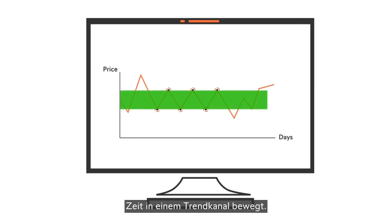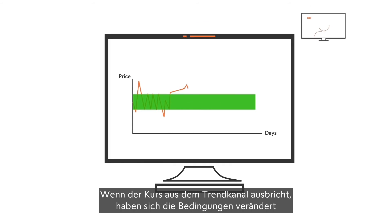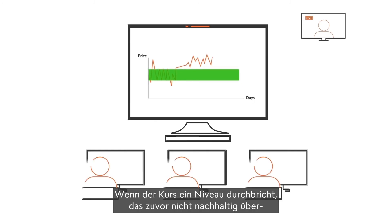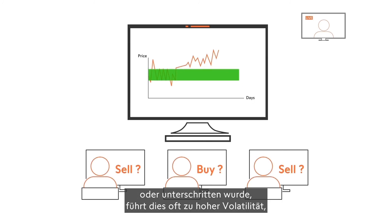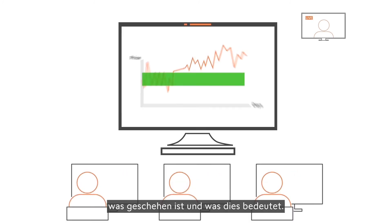For example, say a price has been moving in a so-called channel for a while. If the price breaks out of the channel, something has happened and the market must find a new level. Often there is much volatility when the price breaks through a previous level while the market participants figure out what happened and what they believe that means.